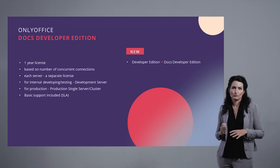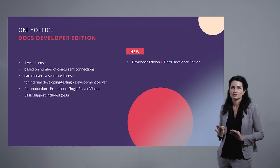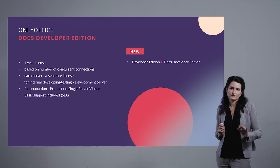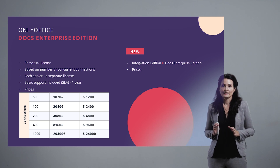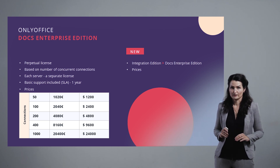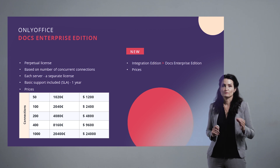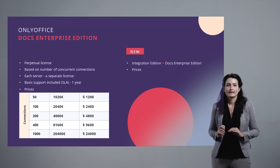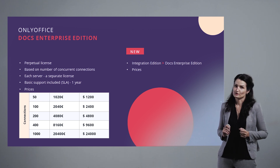The Docs Developer Edition was almost unaffected by the recent changes and now just has a new prefix. It's a license limited to one year, available in two options — developer server and production server — and only a basic level of support is included. As for the Docs Enterprise Edition, it's a lifetime license as before, with one year of support and updates included at the basic support level.